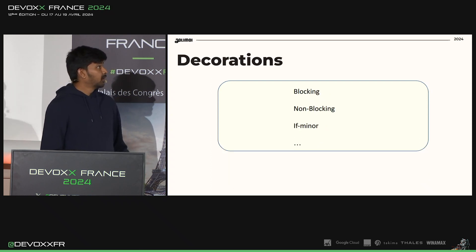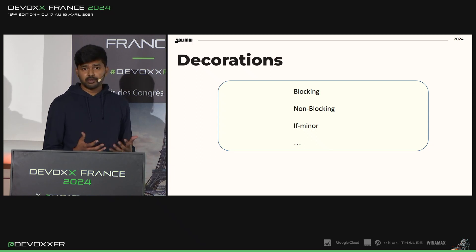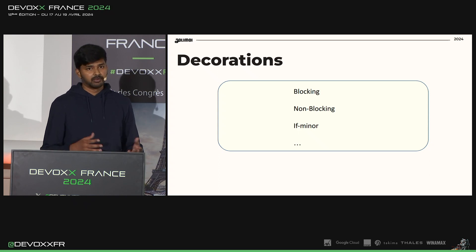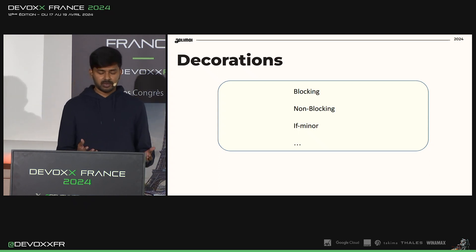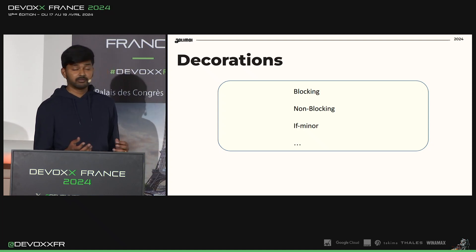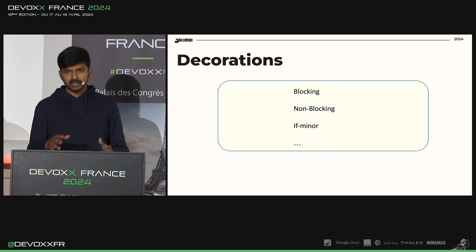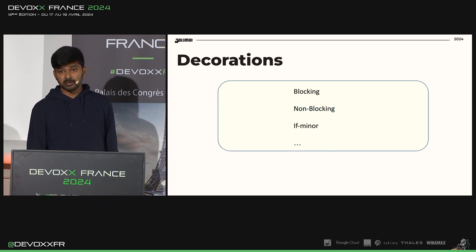For decorations, you can use 'blocking,' 'non-blocking,' or 'if minor.' If you want your comment to be resolved before merging the PR, you put it under blocking. If it is non-blocking, you use non-blocking. If minor means the change the author needs to take is very minimal — he will work for a few minutes and see if he can resolve it; if it takes a lot of time, he can simply resolve that comment later and create a task in backlog.